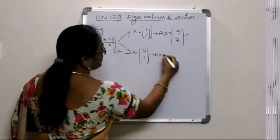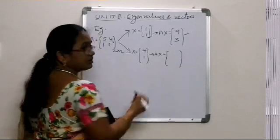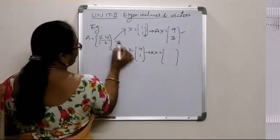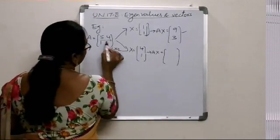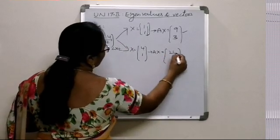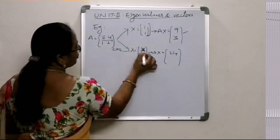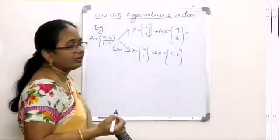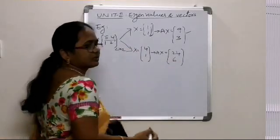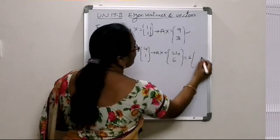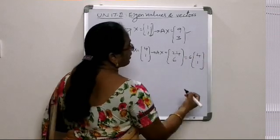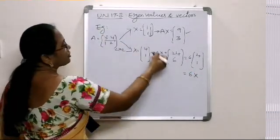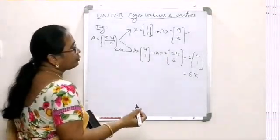Similarly, in the second case, when we multiply A with x = [4, 1]: row [5, 4] into column [4, 1] gives 5 times 4 plus 4, which is 24. Second row [1, 2] into [4, 1] gives 1 times 4 plus 2 times 1, which is 6. When 6 is taken common we get [4, 1], which is x itself. So we can observe: A times x equals 6 times x. Can you observe the difference between the two cases?